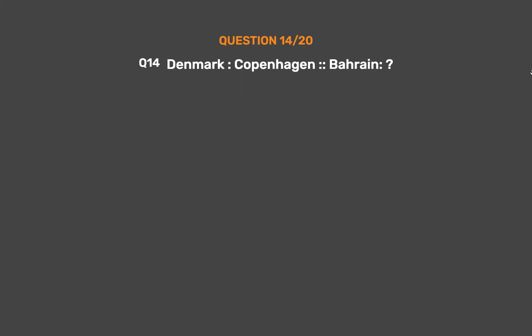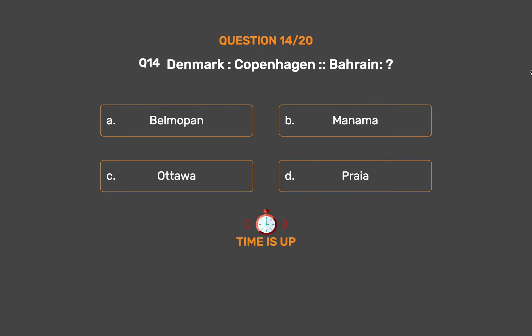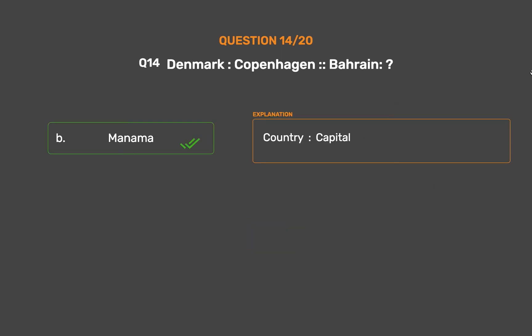Question No. 14. Denmark : Copenhagen :: Bahrain : ? Option A: Belmopan. Option B: Manama. Option C: Havana. Option D: Prior. The correct answer is Option B, Manama. Country : Capital.